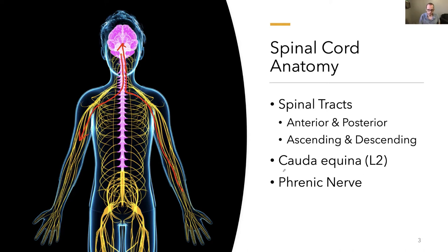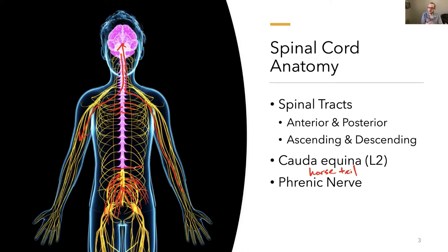The cauda equina is below L2 — that's where the spinal cord proper ends. Cauda equina means horsetail, named for the shape of all the nerves branching out there. Below L2, rather than one-to-one nerve exits, it's lots of branches. Those nerves go down to the bladder, bowels, lower body, and legs — the entire lower portion of the body.